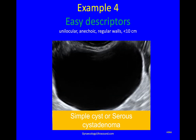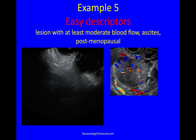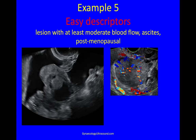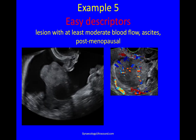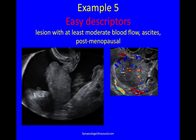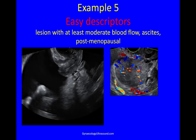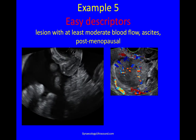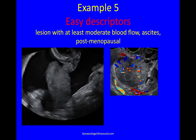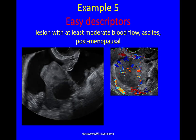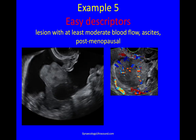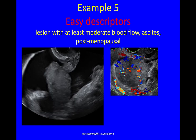Those were the four benign easy descriptors. The fifth is a malignant descriptor: if you have a postmenopausal woman with a solid mass, a lesion with at least moderate blood flow and ascites, it's going to be malignant.